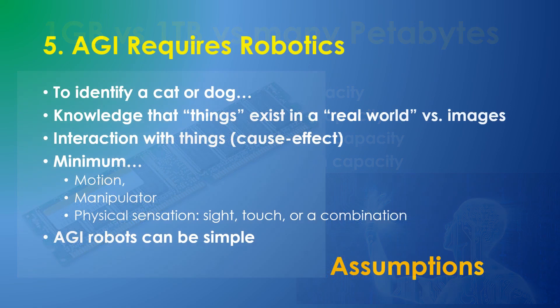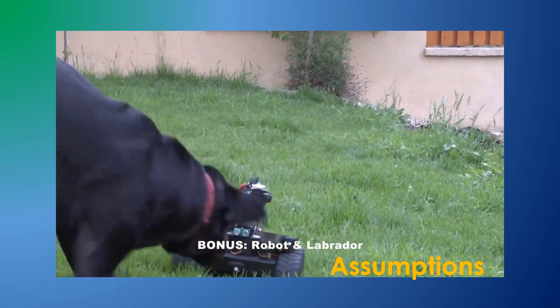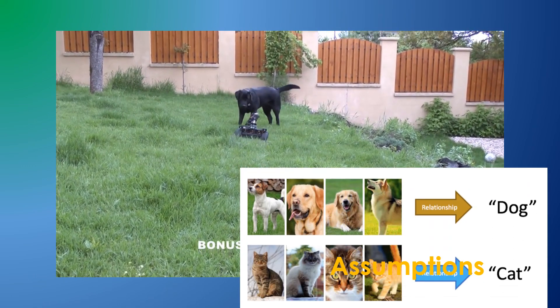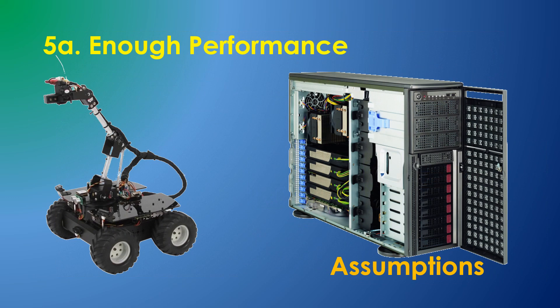Assumption 5: AGI requires robotics. Consider a common limitation of many AI programs — they can manipulate words or images but have no understanding that things exist in a world. A little robot might learn more about a dog by interacting for 10 seconds than from any number of images. How could an AGI understand that actions it takes cause reactions if it has no ability to interact? The robot need not be complex, but should include motion, vision, and manipulation. I assume that enough functionality can emerge from a powerful desktop computer controlling a simple robot to validate these design ideas.